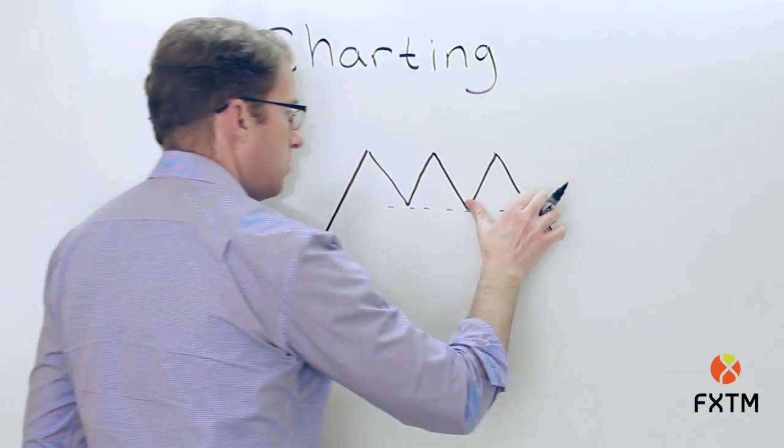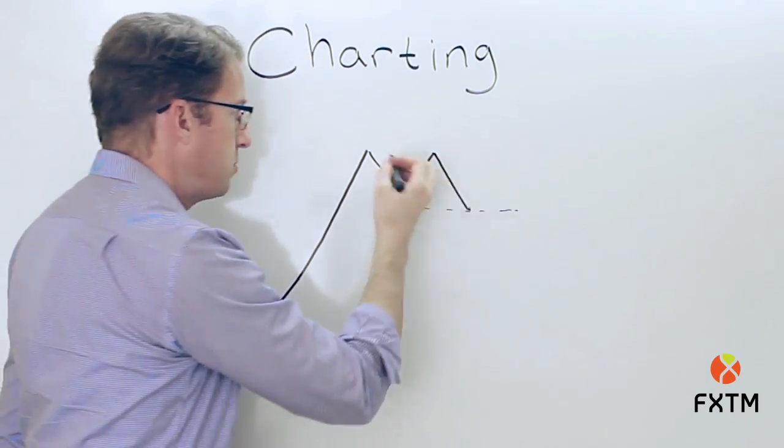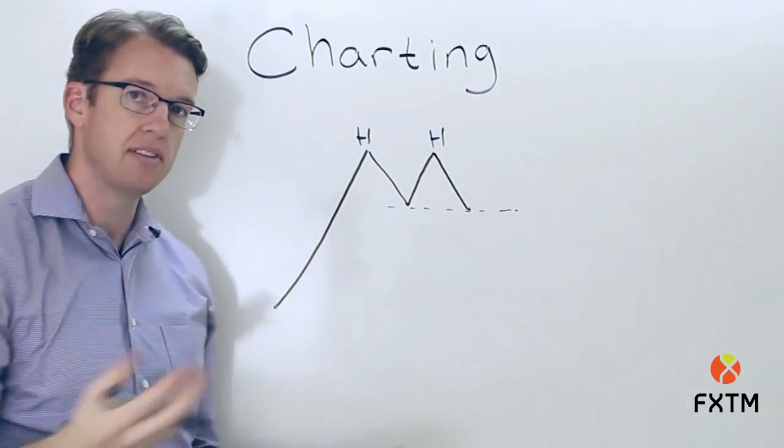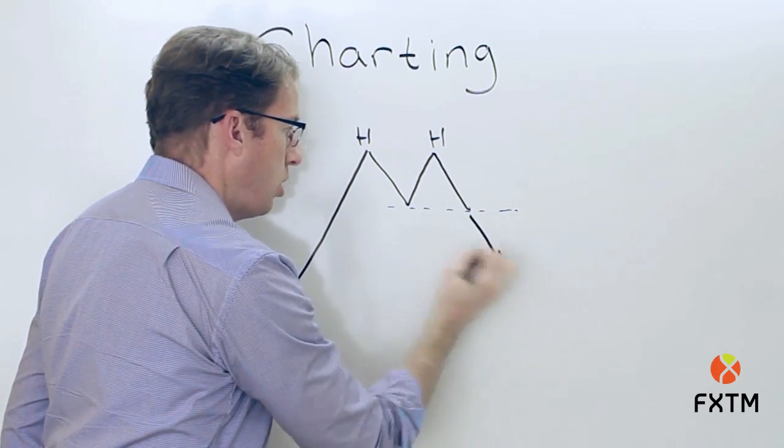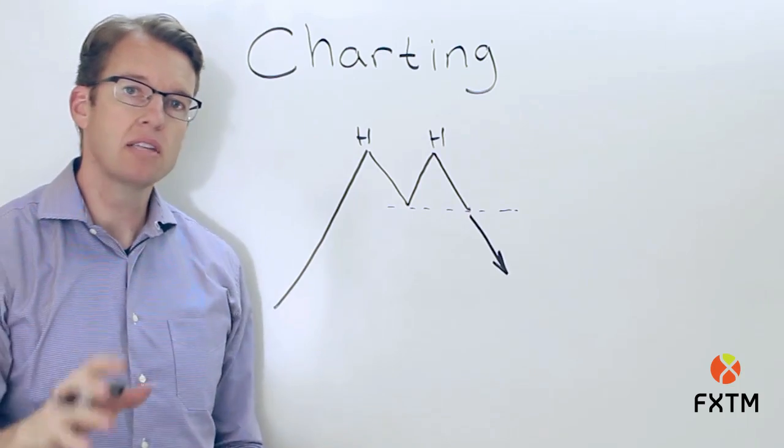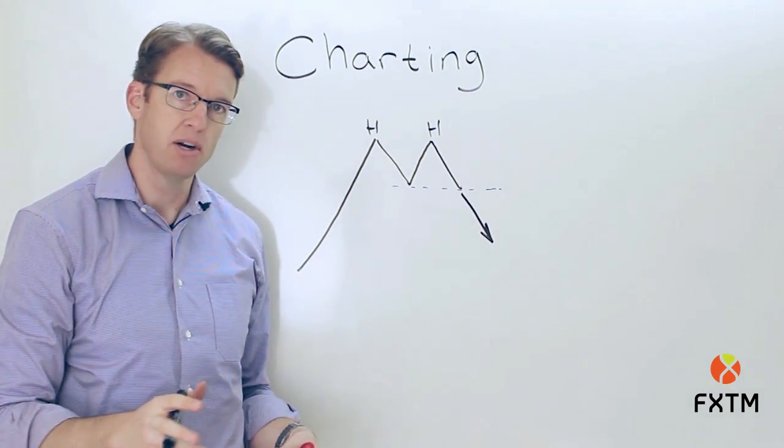In fact, many times we'll get reversal patterns that are not three tops but just two. So we have a high there and we have a high there roughly at the same height, and then we have a break below the midpoint again. So this would be a double top. In fact, let's take a quick look at a double top so you can see how this plays out in the live market.